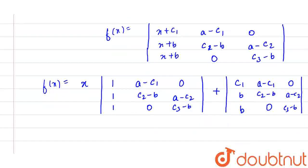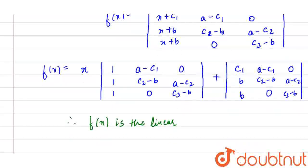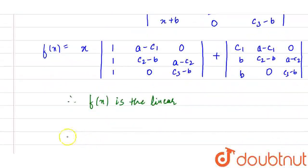From this we can say that f(x) is linear. Therefore the function f(x) equals px + q for some constants p and q.